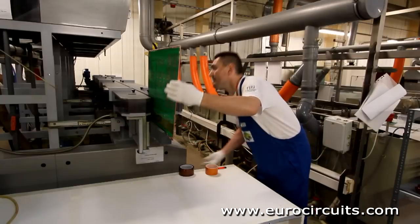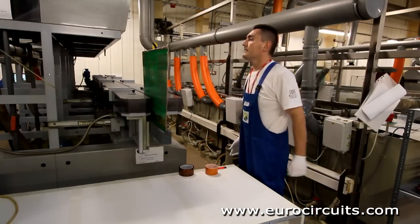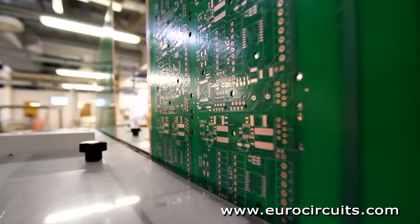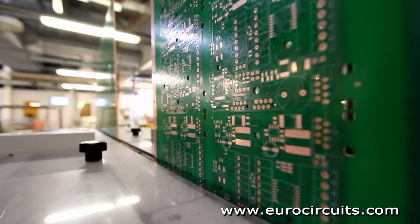First the operator puts protective tape on the board above the connectors. Then he mounts the panel on a horizontal electroplating bath.